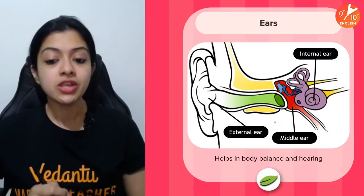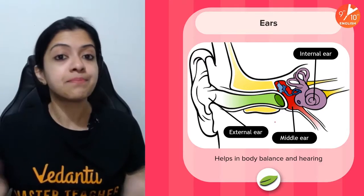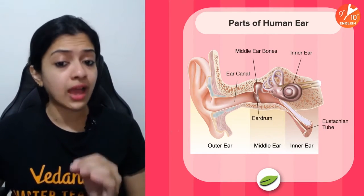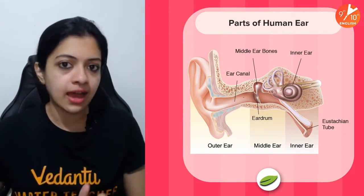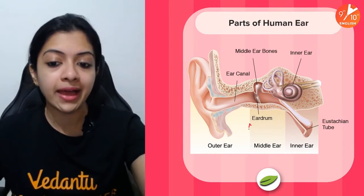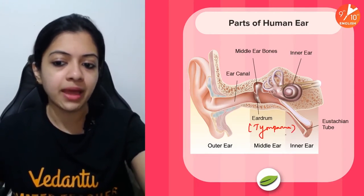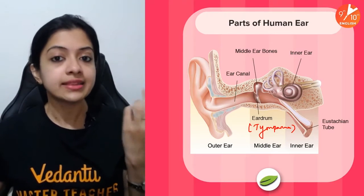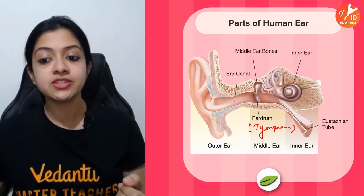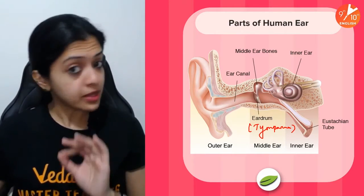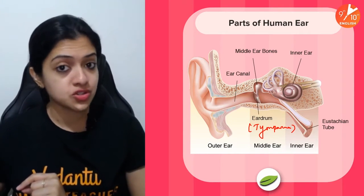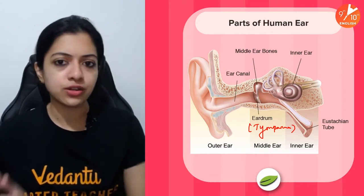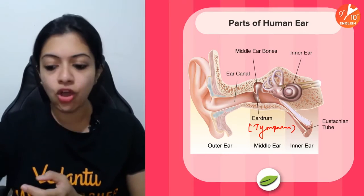Now coming to the human ear — the organ which helps in hearing and body balance. The ear is divided into three major parts: the external ear, the middle ear, and the internal ear. The external ear comprises the pinna and the ear canal, which leads to the eardrum or tympanic membrane. The middle ear contains the three ear ossicles — the malleus, incus, and stapes — and the eustachian tube, which connects the middle ear to the throat. The inner ear contains the semicircular canals and the cochlea, which are filled with fluid — perilymph and endolymph — and the auditory nerve.